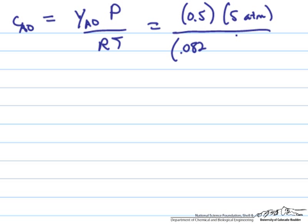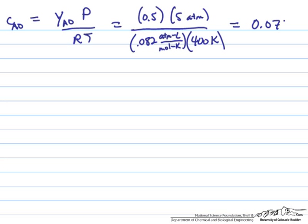We can use the 0.082 value, which I should put units on. The temperature is 400 Kelvin and is isothermal as given in the problem statement. Therefore, the inlet concentration of A is 0.076 moles per liter.